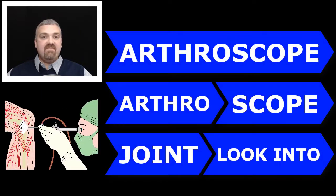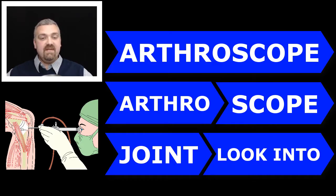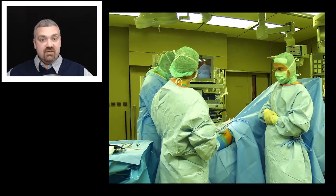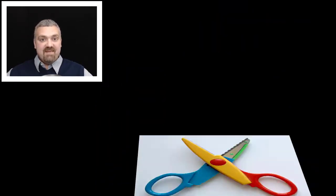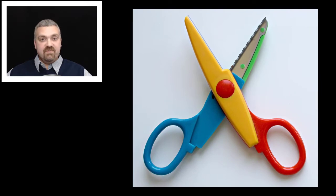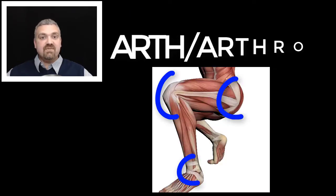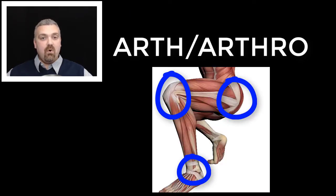Lastly, we have the arthroscope or arthroscopic procedures. Arthro means joint, scope means to peer into. So an arthroscope is a device that allows a surgeon to look inside a joint. An arthroscopic procedure would be while they're in there peering around — maybe they cut out some meniscus or do some sort of surgical procedure. Those are some examples of arth or arthro, which means joint.